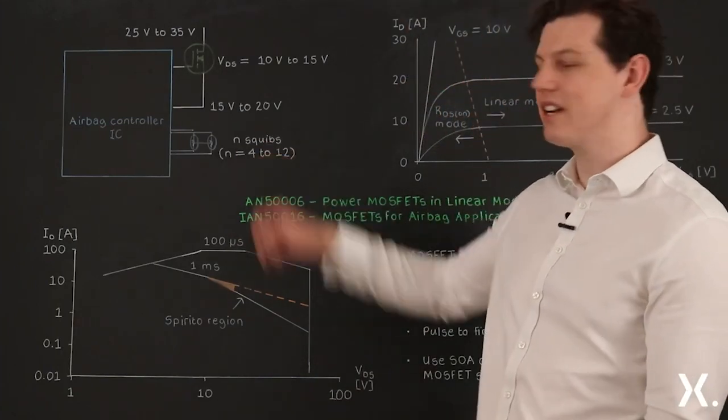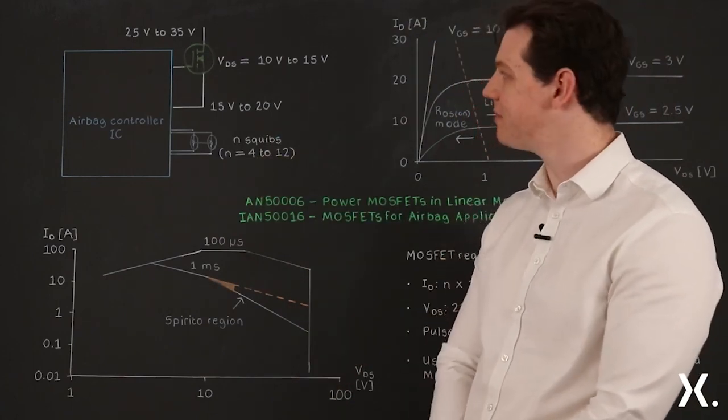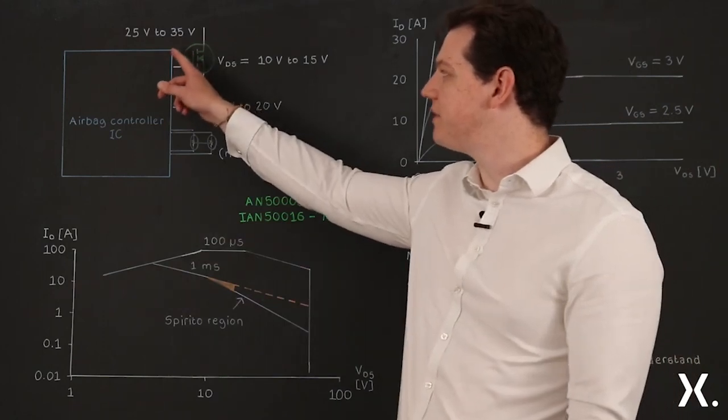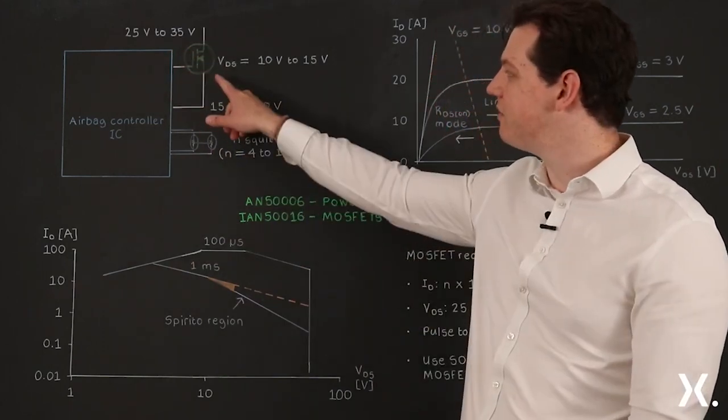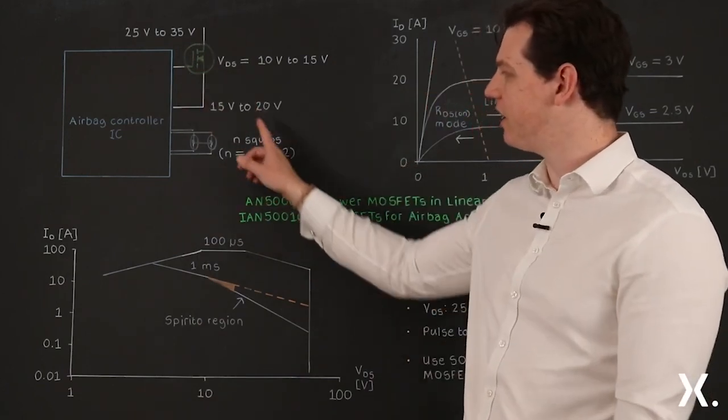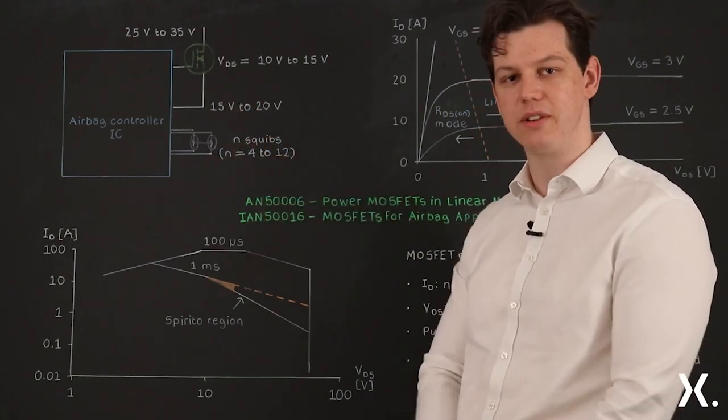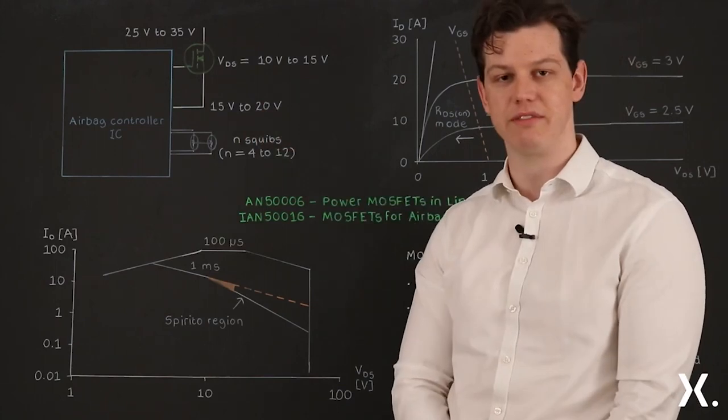This here is a circuit diagram for an automotive airbag system. We have a supply voltage of 25 to 35 volts coming from a boost converter and this is the voltage regulating or safing MOSFET that we're discussing. This regulates the load voltage to 15 to 20 volts resulting in a VDS across the MOSFET of 10 to 15 volts.